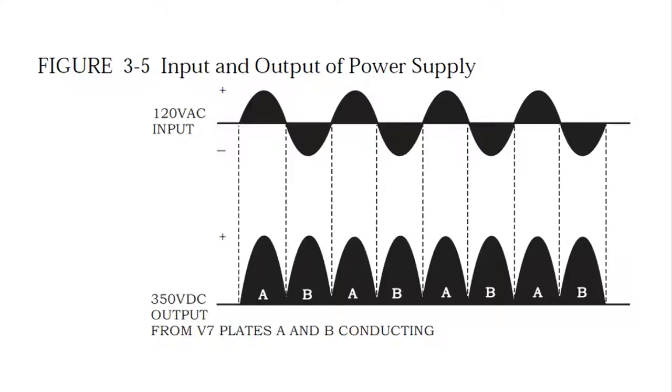Now if we had a half wave rectifier here, what we would have on the bottom line, we would either have all A's or all B's. But since this is a full wave rectifier, we have both.